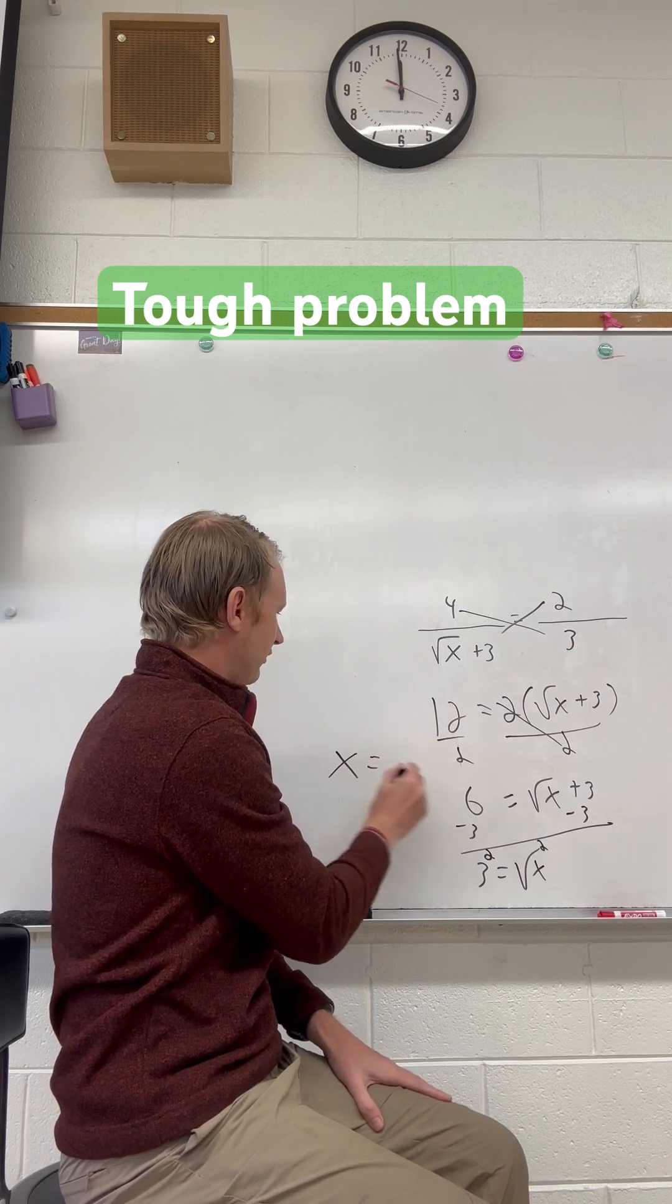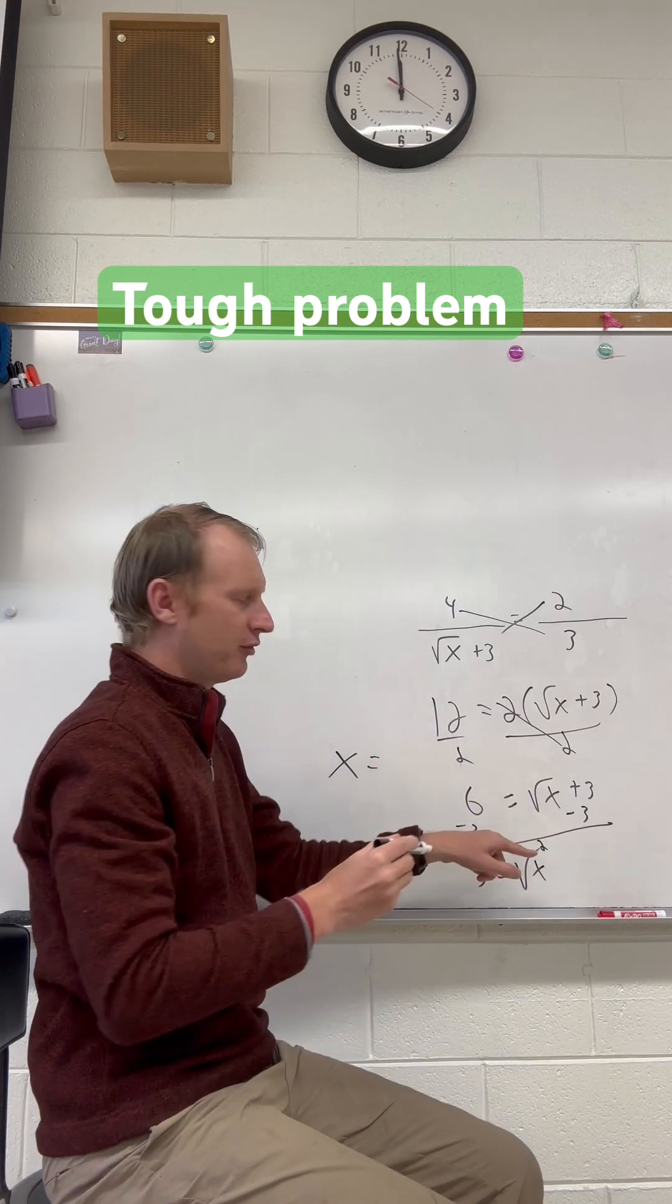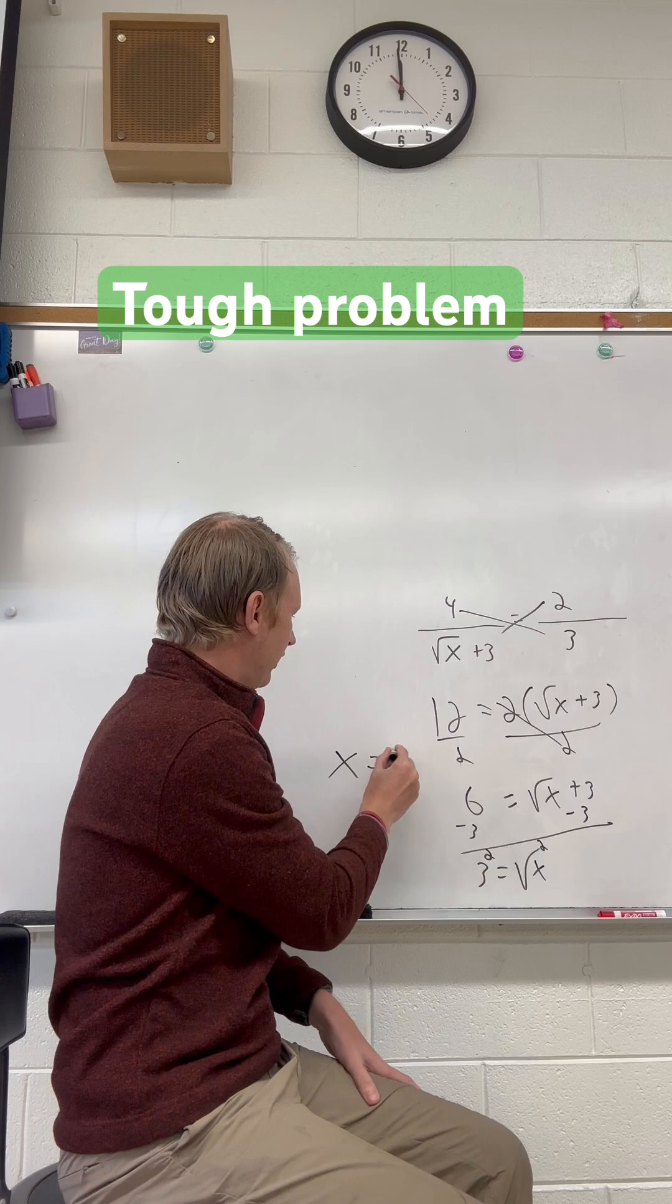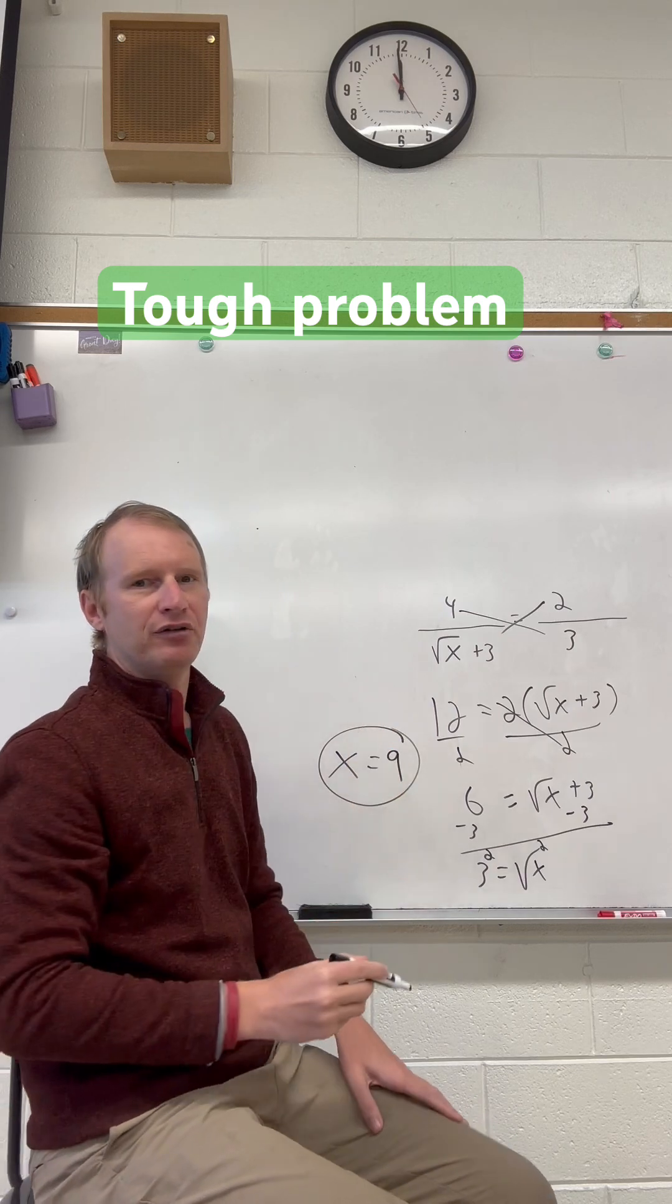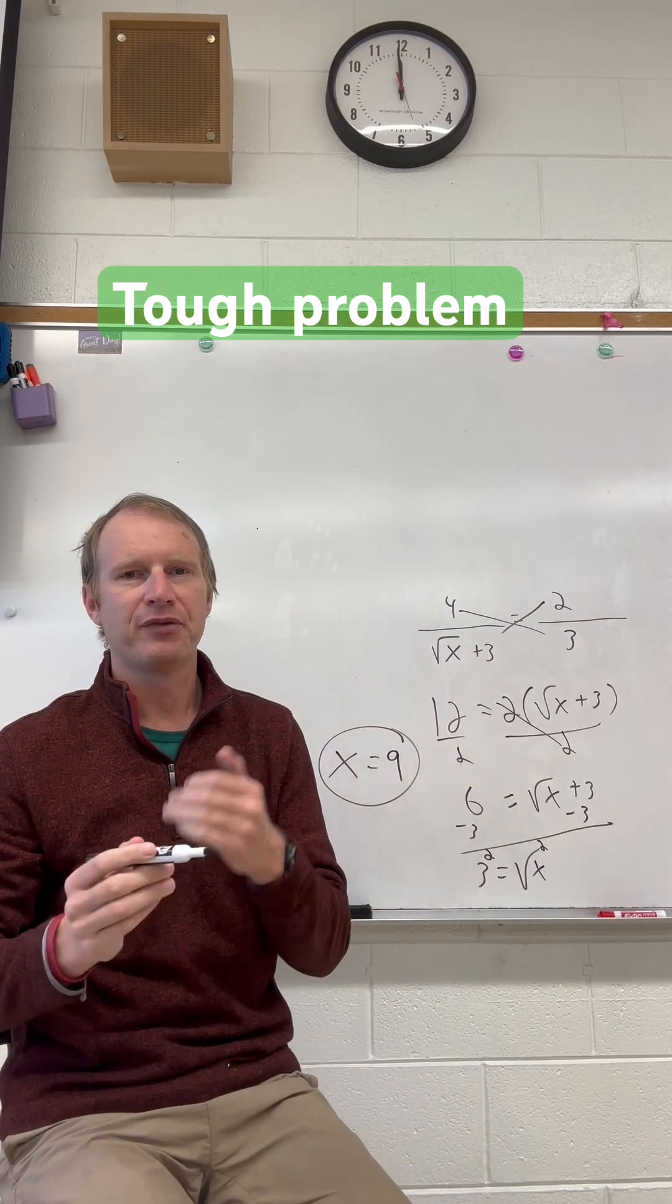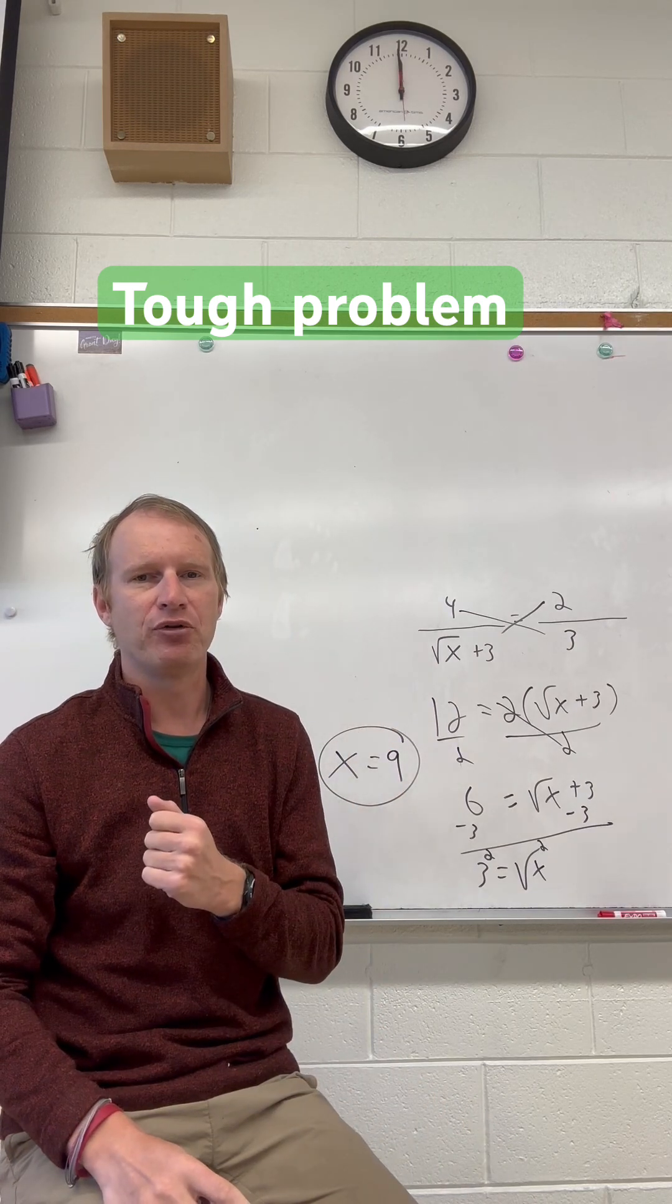and we get that x, because the square root is going to cancel out, so we get x equals 3 squared, which is 9. So your final answer is x equals 9. Let me know your thoughts on that one. Hope you enjoyed it.